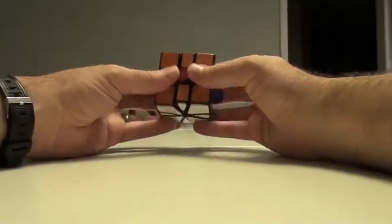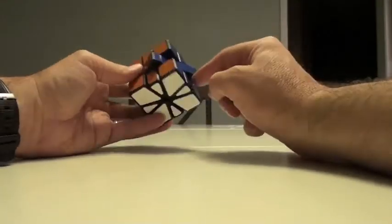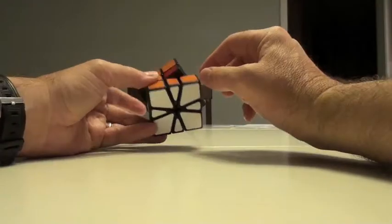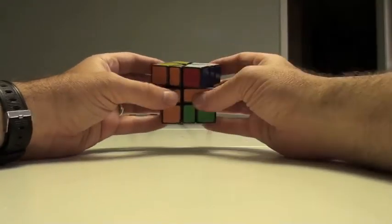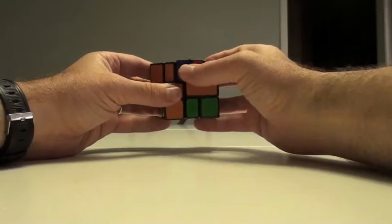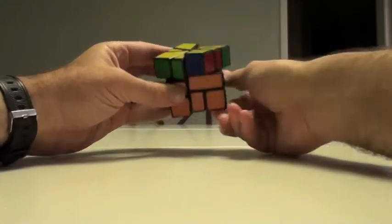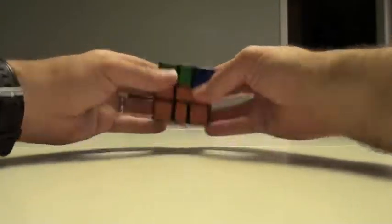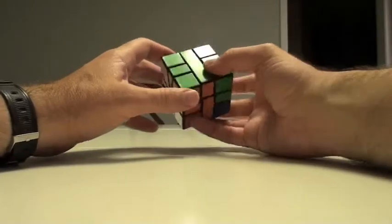So I hope that kind of clarifies how to get that back. Now if you want to get the center back, that's easy too. Just hold it over here and just go 2R 2U 2R 2U 2R, and you'll get the center back, and that's how you move all the corners up to where they're supposed to be.